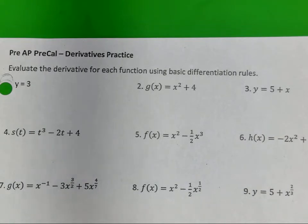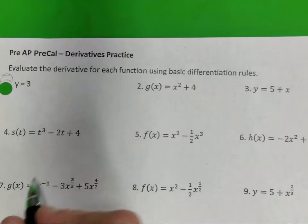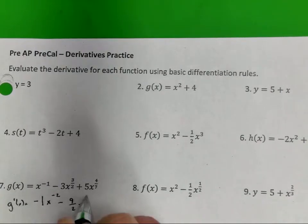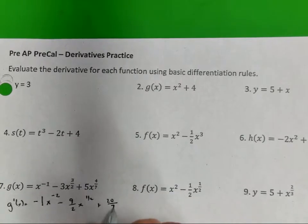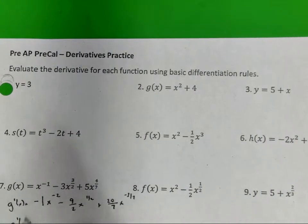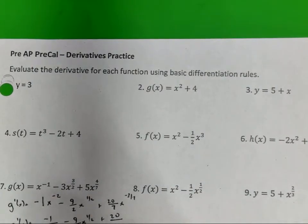Number 6, h prime of x equals negative 4x plus 3. Very good. Number 7, g prime of x equals negative 4 over x squared minus sine of x, plus 1 half x to the 1 half power. Number 8 would be g prime of x equals negative 1 over x squared minus 9 halves x to the 1 half plus 20 over 7 times x to the 3 sevenths. You can also write negative 9x to the 1 half over 2, putting that x in the denominator to get rid of the negative exponent.